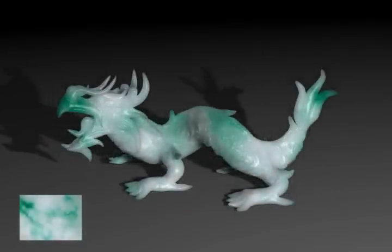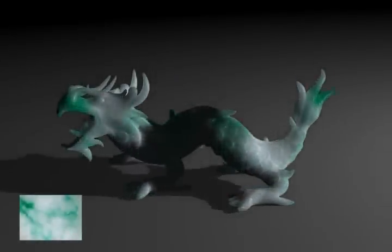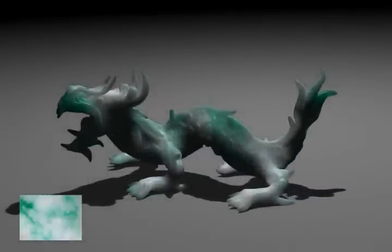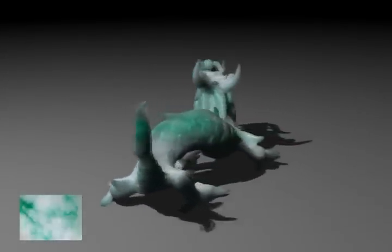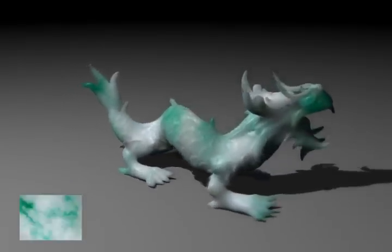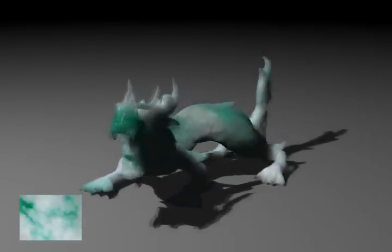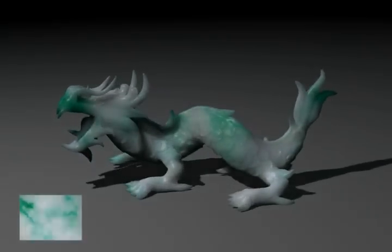Finally, we show another hallucination result. Here, the BSS-RDF is hallucinated from the jade material in the input image shown at the bottom left. Although the albedo of the new jade material is totally different from the measured jade material, the hallucinated BSS-RDF generates visually pleasing rendering results.